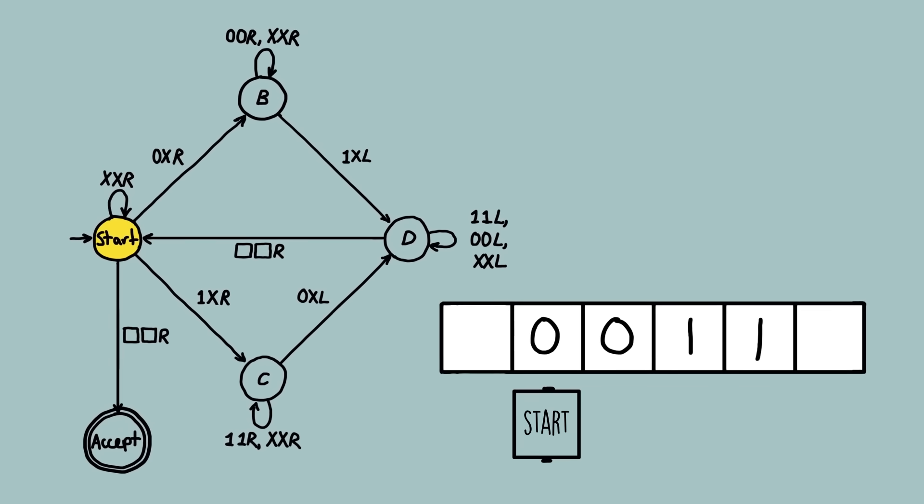It reads a zero, replaces it with an X, moves one square to the right and into state B. Now the machine has just seen a zero and needs to find a one to pair it with. So state B says, if I see a zero or an X, I'll leave them alone and move right one square and stay in state B. If I see a one, I replace it with an X and move to state D. So our scanning head reads a zero, moves one square to the right and stays in state B. Now it reads a one, replaces it with an X and moves one square to the left and into state D.